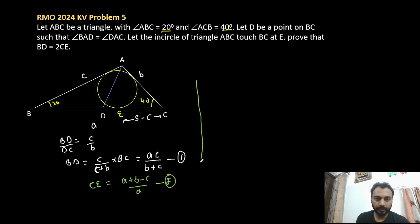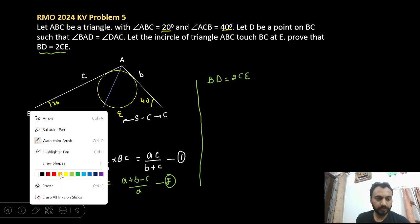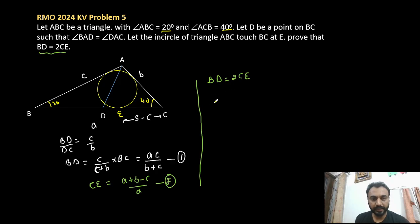Now if I put these two values in this BD equals twice of CE, so now if we simplify that it will be ac equals a times b minus c by 2.